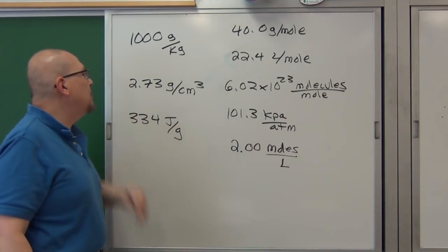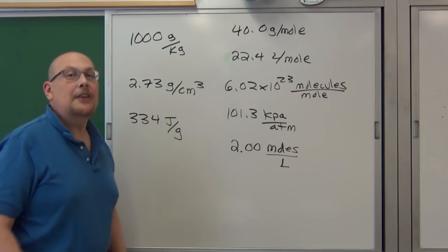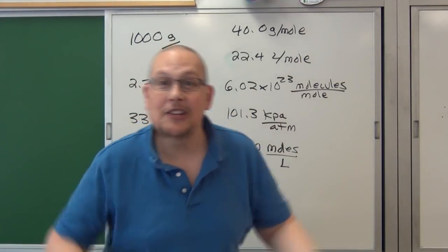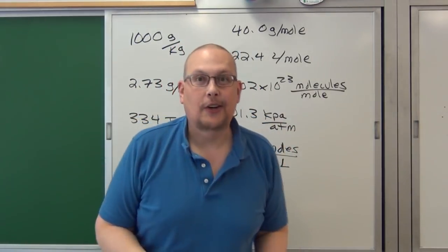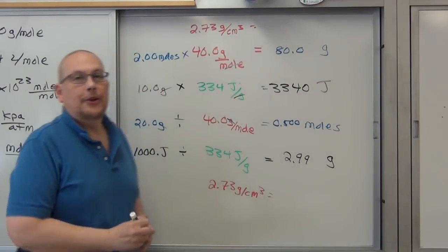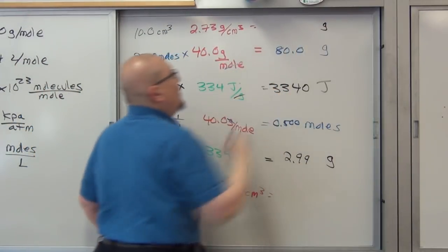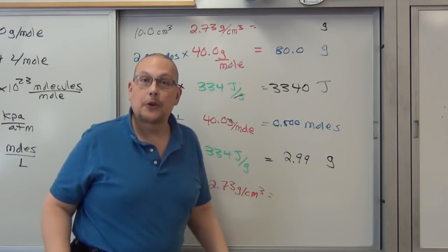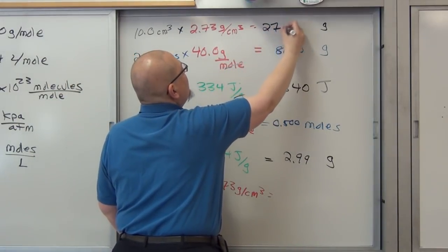One more example. The density of aluminum is 2.73 grams per cubic centimeter at room temperature. We can use it to convert between grams and cubic centimeters. You know the equation density equals mass over volume, but most people can't solve for mass or volume because they don't know the algebra. With this, you don't have to. Suppose we know the volume is 10.0 cubic centimeters and we want to get grams. We're trying to solve for the numerator, so we multiply, and we get 27.3 grams.